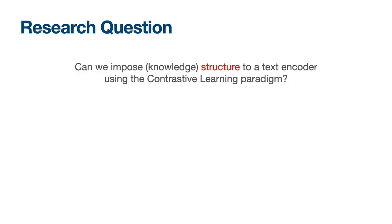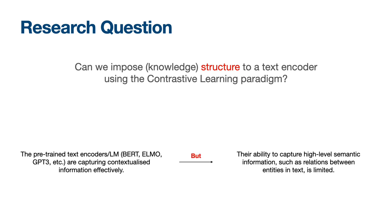The main research question of this study is the following. Can we impose knowledge structure to a text encoder using the contrastive learning paradigm? It is well known that pre-trained language models can capture contextualized information effectively. However, their ability to capture higher-level information, like relations in the text, is limited.